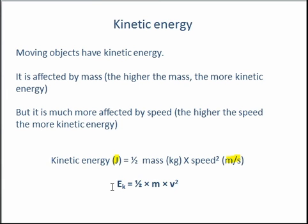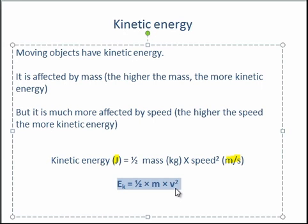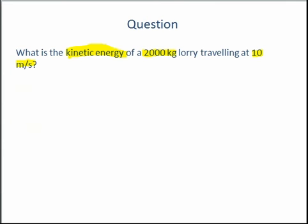So we just need to use this equation here. Our kinetic energy equals a half times mass times speed squared. So firstly, we need to work out what a half of our mass is. That's 2,000 divided by 2, which equals 1,000. So that's our half times mass.